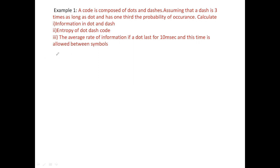First, let us calculate the probability. We have a symbol which consists of dots and dashes. We know that the sum of probabilities is always equal to 1, so probability of dot plus probability of dash equals 1. They have given that the probability of dash is one third the probability of dot.